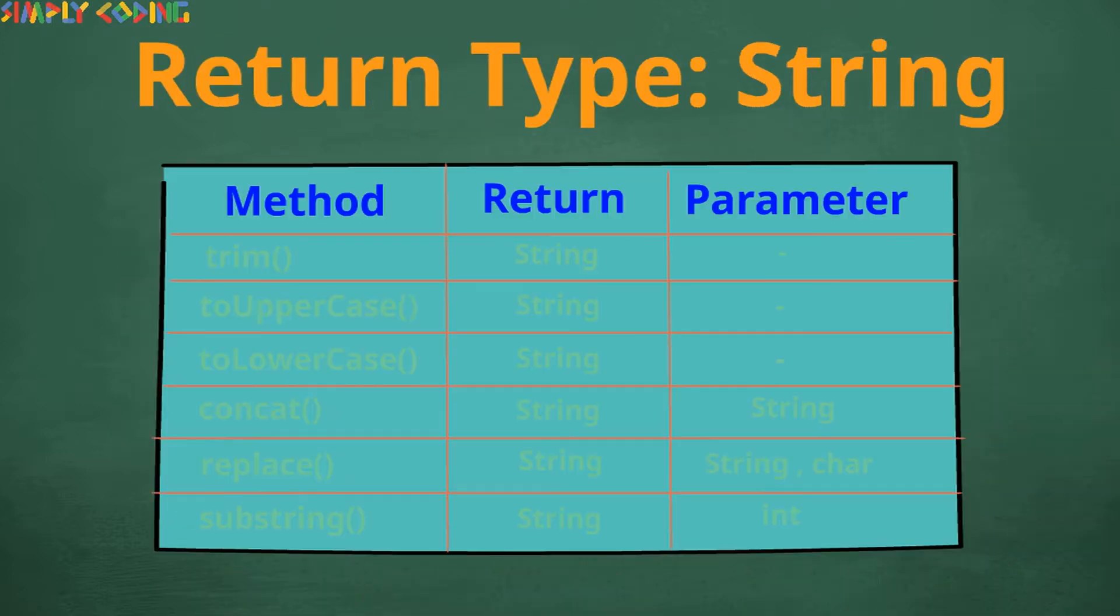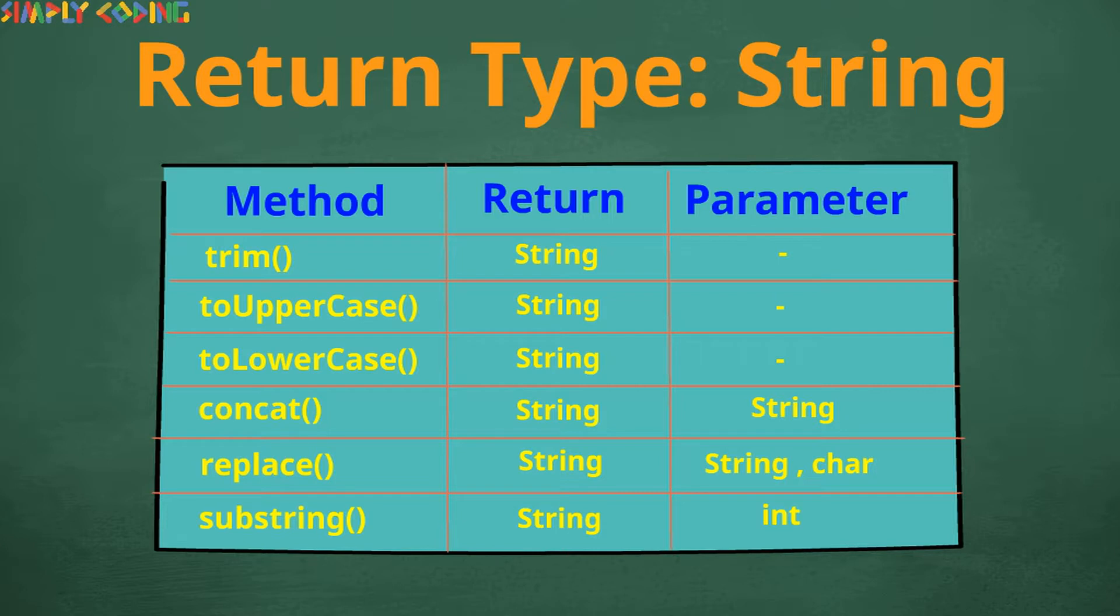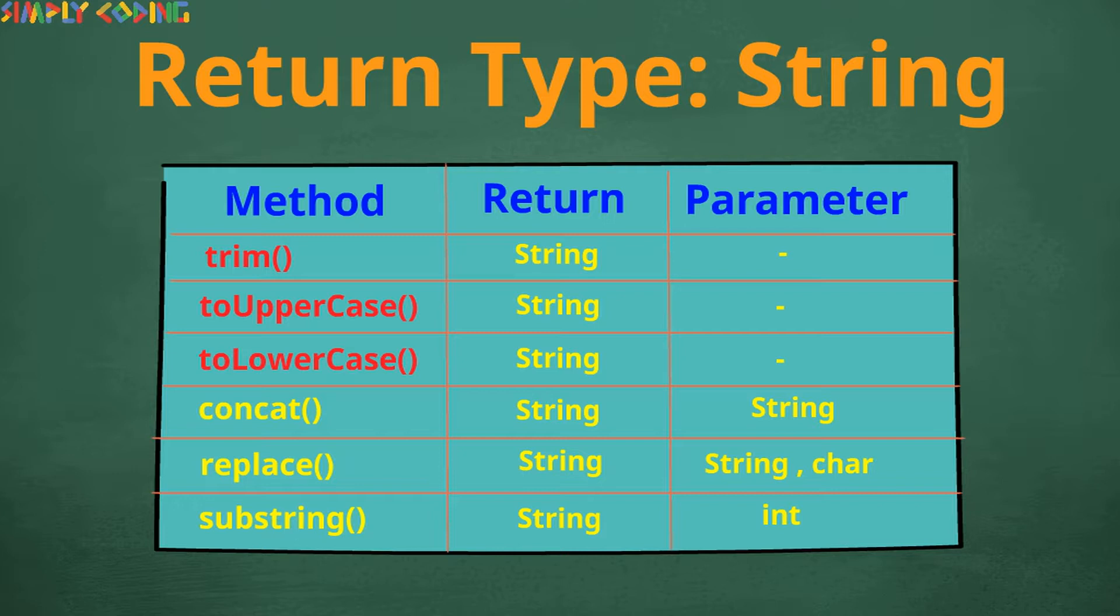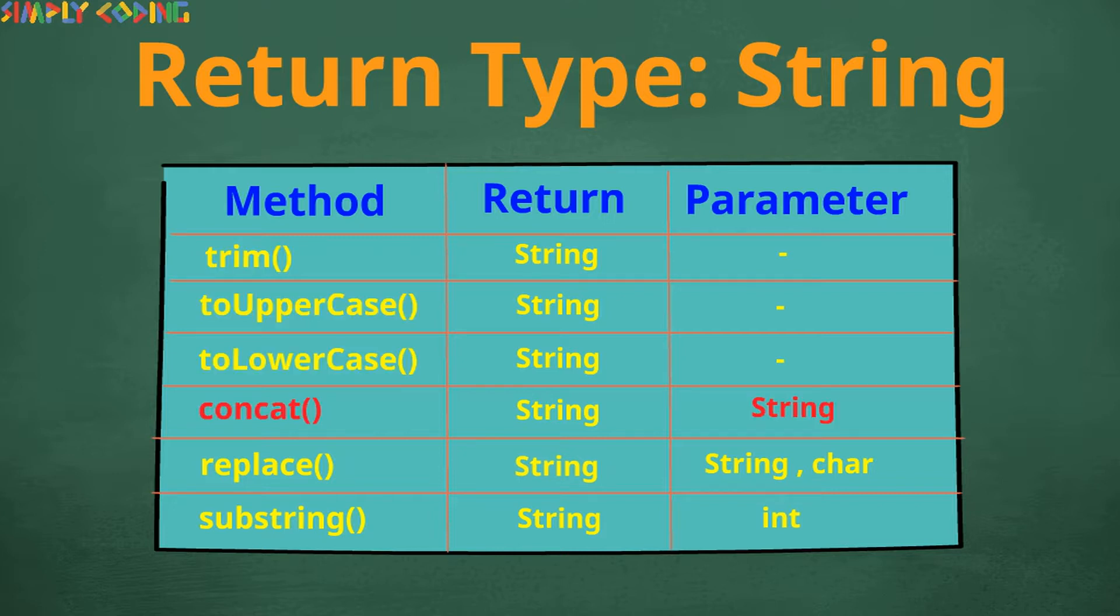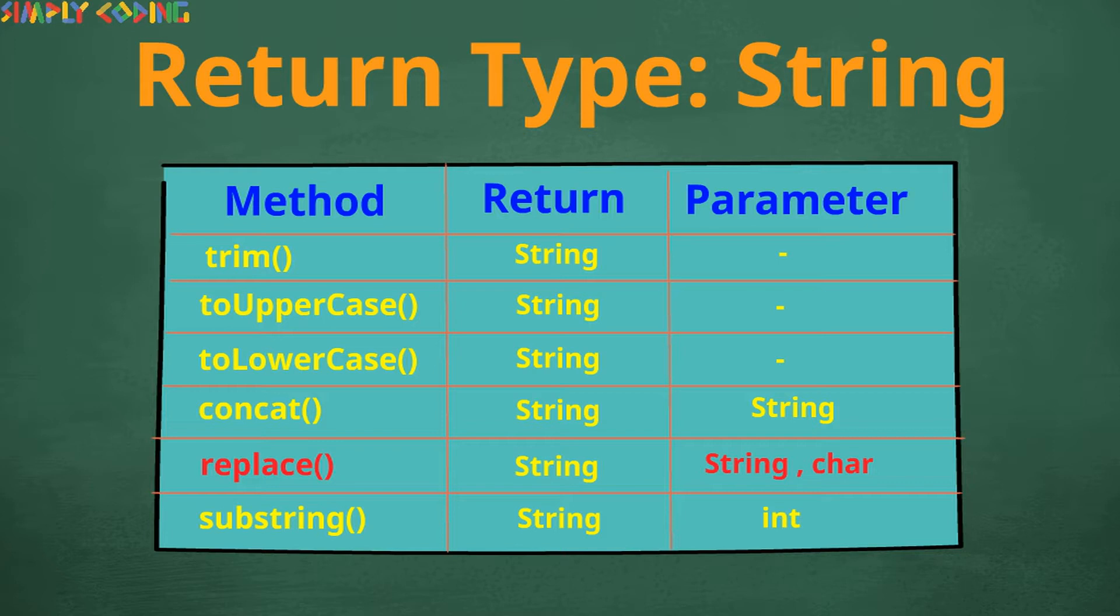Next we will cover six methods which return string. Out of these trim, toUpperCase, and toLowerCase do not take in any parameters. Concat takes in a string. Replace can replace a char or a char sequence. Substring takes in index values so it takes an int.